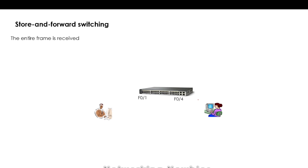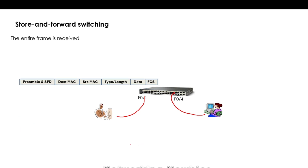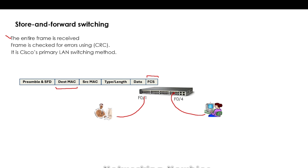In store and forward switching, the switch will first receive the entire frame. It looks at the destination MAC address and also checks the FCS field using cyclic redundancy check (CRC). If there are any errors, it will drop the frame and not forward it to the destination. This is the primary switching method used by Cisco.